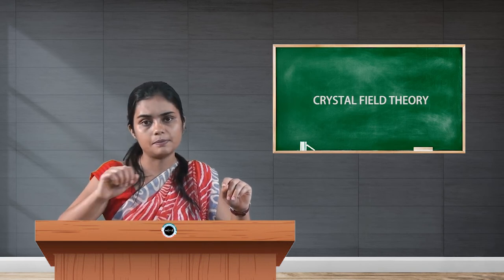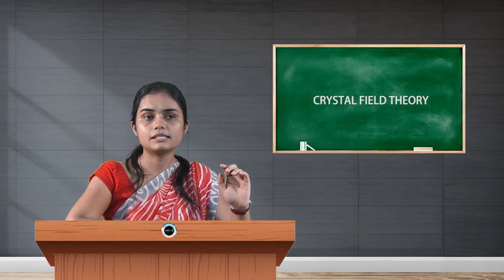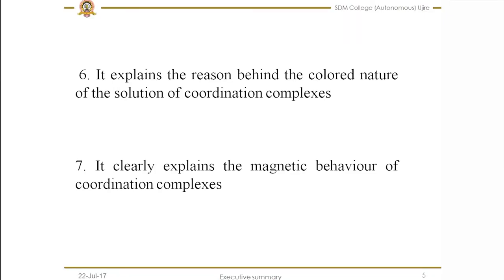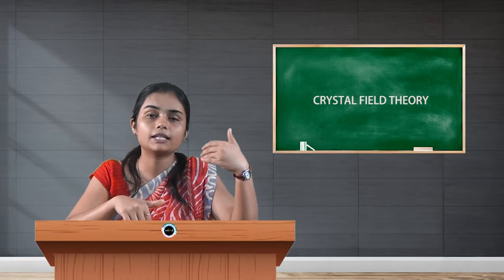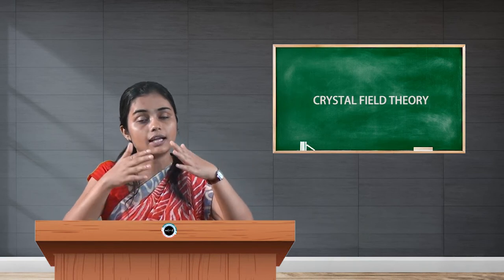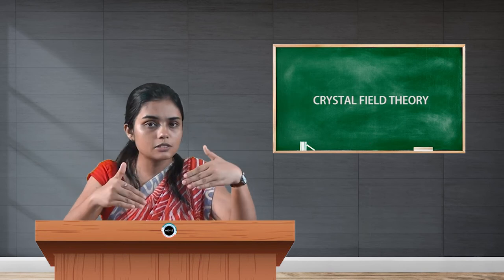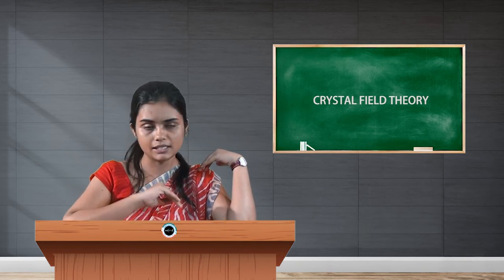CFT successfully explains the absorption spectra and also the colored nature of coordination complexes, which VBT failed to explain. This is one of the main criteria because transition metal complexes exhibit color. We know that potassium permanganate and potassium dichromate are colored in nature, and that was failed to be explained by VBT. CFT proved to be successful in explaining these factors.